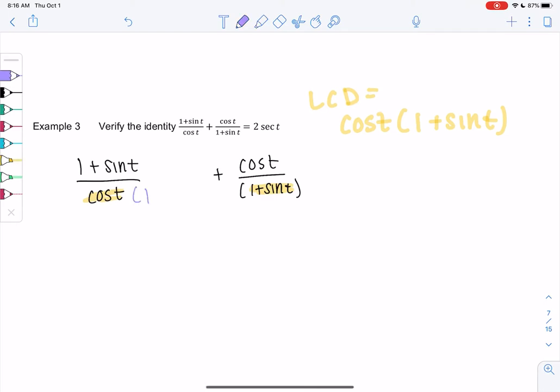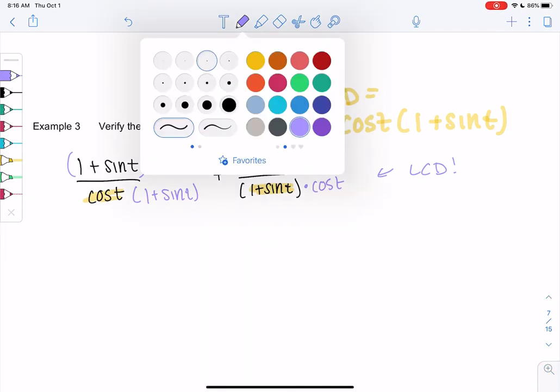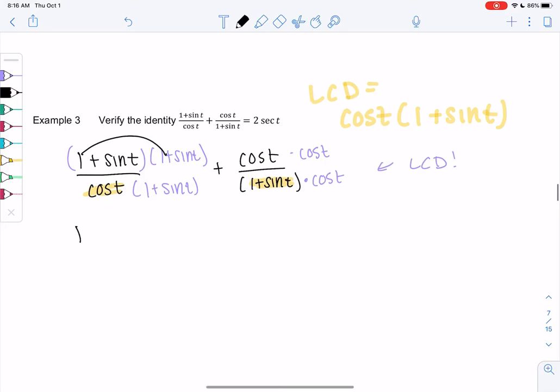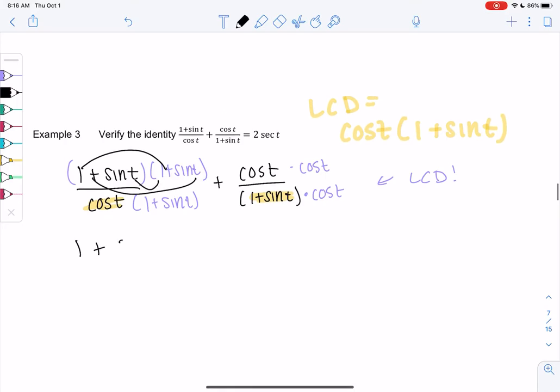We'll multiply the first one times one plus sine t. Put parentheses so you remember to multiply everything by that. And then the second one will be times cosine t. LCD is almost always the right choice when you have more than one fraction. We get one, we get two sine, and then we get sine squared all over cosine t times one plus sine t, and then we get cosine squared over cosine t times one plus sine t.